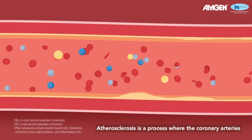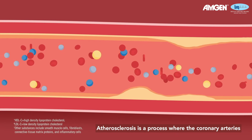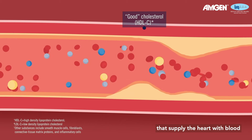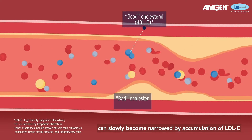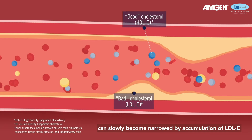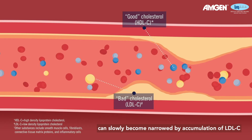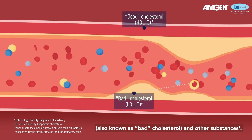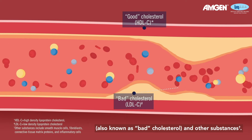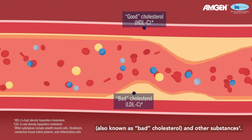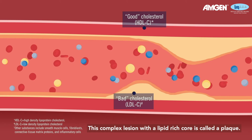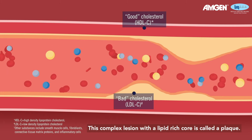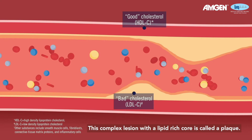Atherosclerosis is a process where the coronary arteries that supply the heart with blood can slowly become narrowed by accumulation of LDL-C, also known as bad cholesterol, and other substances. This complex lesion with a lipid-rich core is called a plaque.